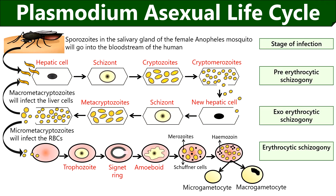A trophozoite goes through several morphological changes. First, a signet ring forms where a trophozoite attains a large size with a large non-contractile vacuole in between. Then, the wall of the trophozoite becomes irregular, resulting in the amoeboid stage. During the amoeboid stage, the hemoglobin completely converts into hematin and globin. Then a trophozoite differentiates into erythrocytic schizont that undergoes cell divisions to produce a large number of merozoites. At last, a rosette stage appears in which the merozoites shift towards the RBC's periphery and rupture the RBC wall.